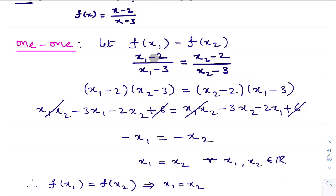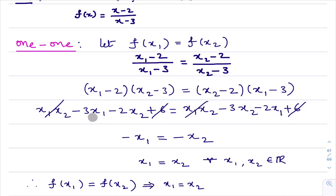Now I will simplify. First, cross multiply: (x1-2)(x2-3) = (x2-2)(x1-3). Multiply out: x1·x2 - 3x1 - 2x2 + 6 = x1·x2 - 3x2 - 2x1 + 6. The x1·x2 terms cancel and the 6's cancel. Taking -2x1 to the left gives -3x1 + 2x1 = -x1, and taking -3x2 to the right gives -3x2 + 2x2 = -x2, so the negatives cancel and we get x1 equal to x2.